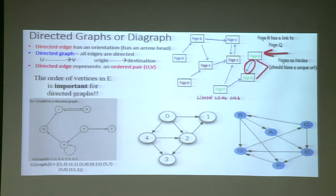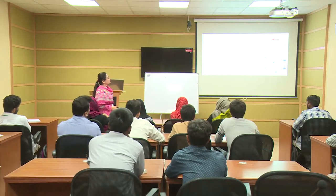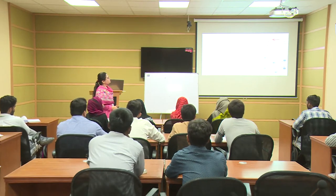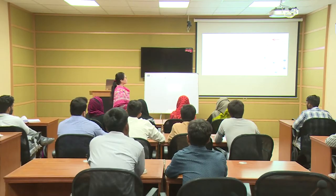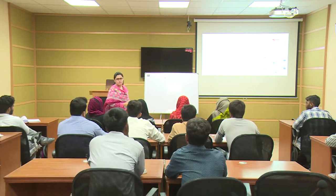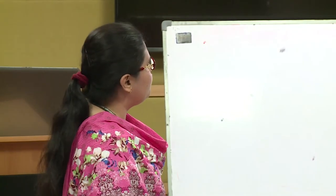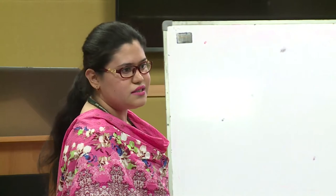Directed graphs are also called digraphs. For example, the World Wide Web — all pages are represented as nodes or vertices and connections between pages are represented as hyperlinks. If we want to go to page Q, the hyperlink of page Q is on page R. There is also a connection called a self loop, where a vertex is directed towards itself.